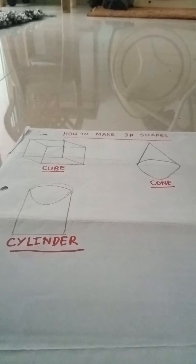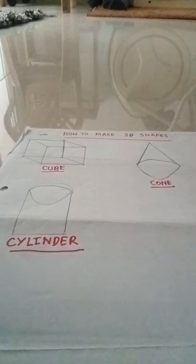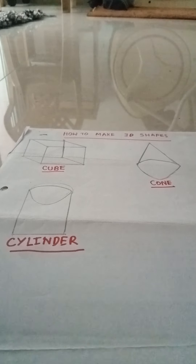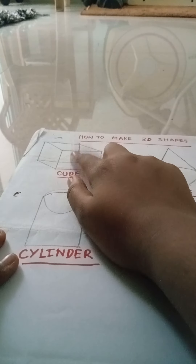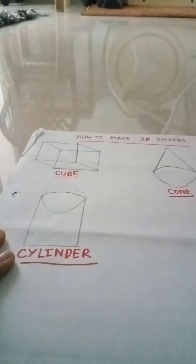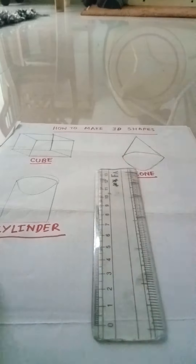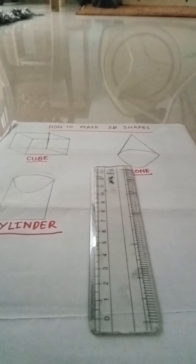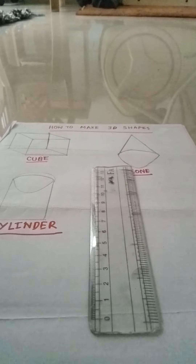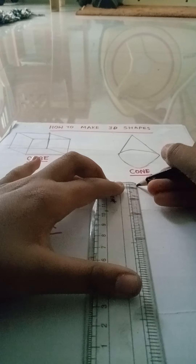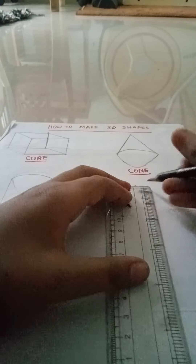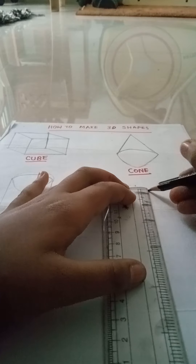Our next shape is cuboid. Okay guys, we are drawing a cuboid. It is also the same like a cube. We will draw a little down because it needs much space. First we have to draw a rectangle.